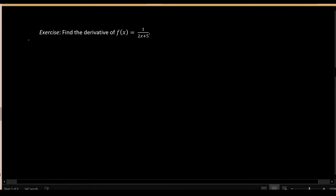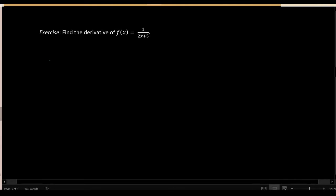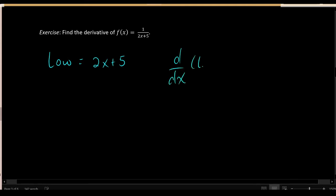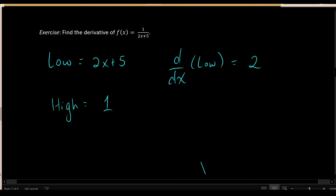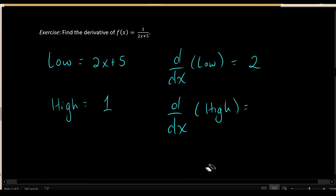Let's find the derivative of another function: we have the constant function 1 in the numerator and 2x plus 5 in the denominator. The low function is 2x plus 5, and d low — its derivative — is just 2, the slope of that line. The high function is the constant 1, and d high — the derivative of 1 — is 0.